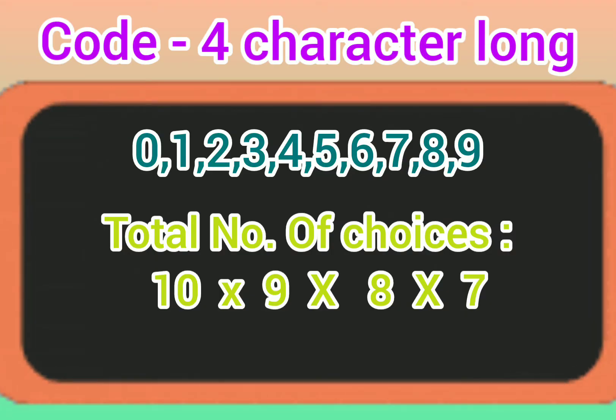Suppose let us consider one example. There is a code and it is 4 characters long. It is made up of numbers only and repetition of number is not allowed. Then we know as it is made up of numbers there can be a number from 0 to 9. It means there are 10 possible digits.